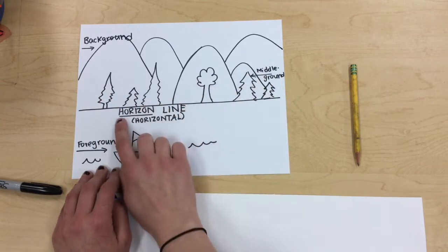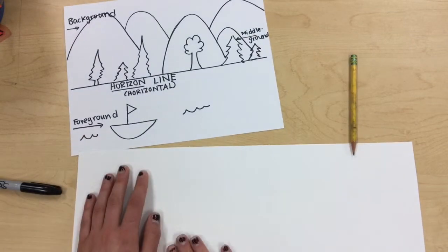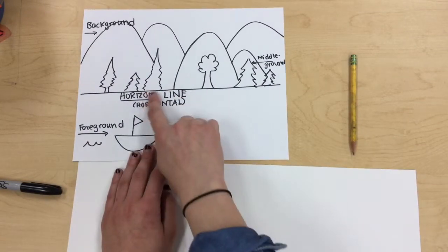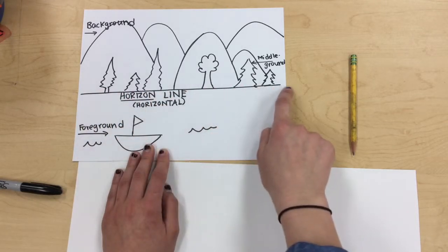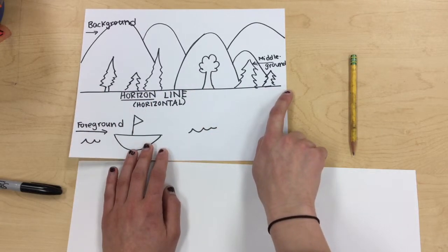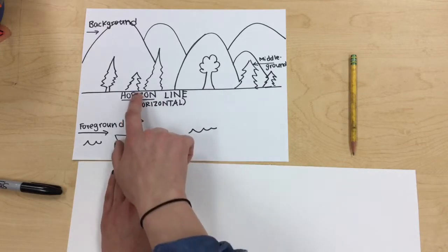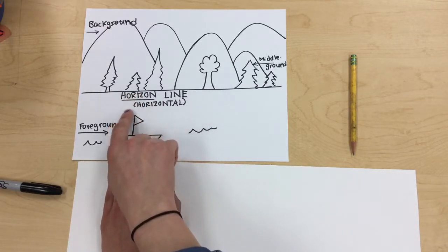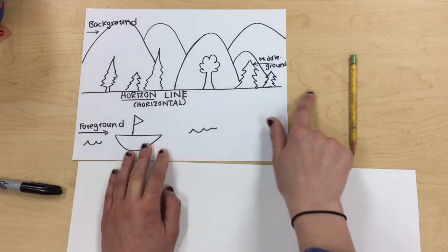Usually around your middle ground is your horizon line and we're going to make that in just a second on our paper. But your horizon line is the line that goes straight across your paper and that's usually the line that is horizontal. So you can see I wrote that word here. That's where the word horizon line comes from, is the word horizontal, and that means a line that goes straight across.